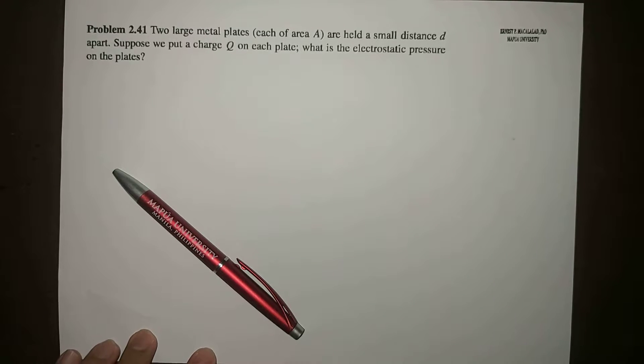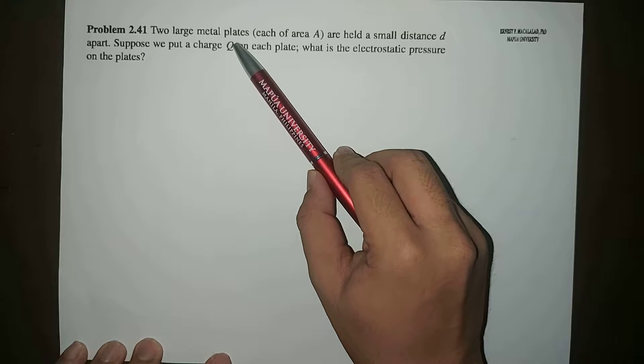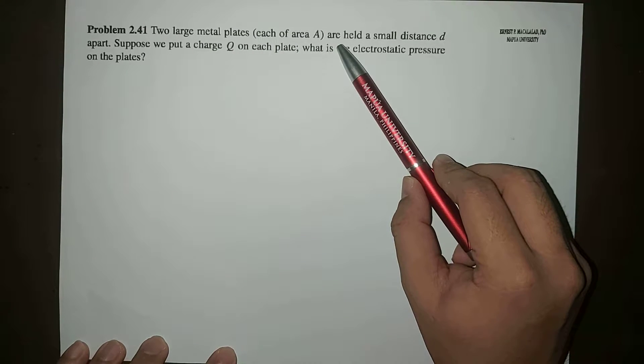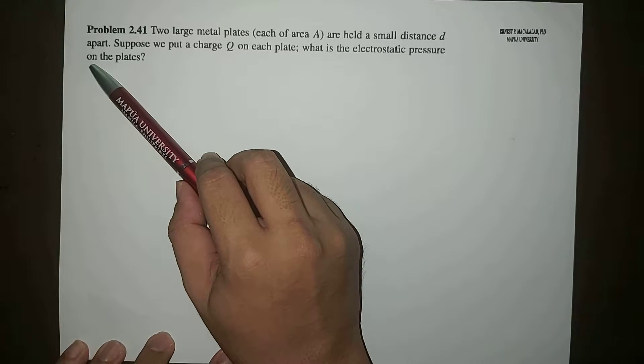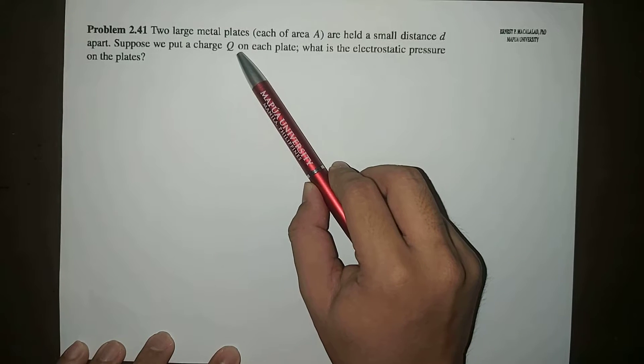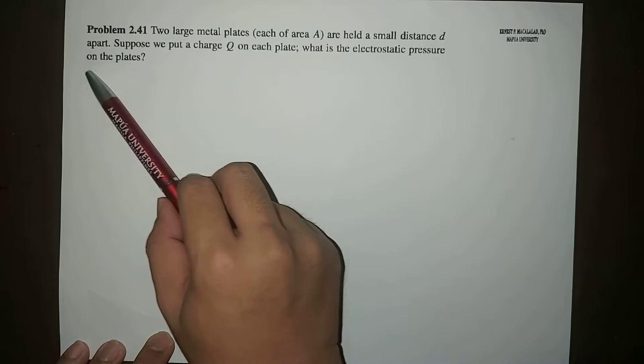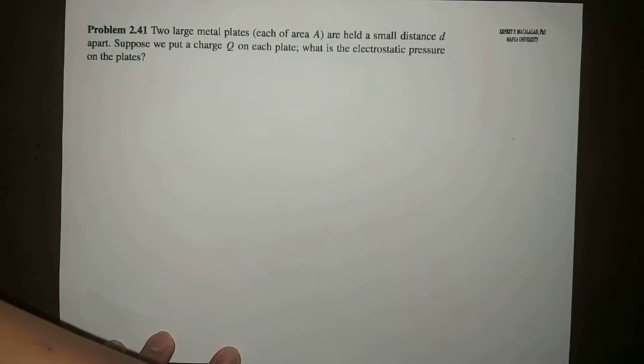What's up guys, it's me Sir Ernest and today we're going to solve problem 2.41 of Griffith's fourth edition. The problem reads: two large metal plates, each of area A, are held a small distance D apart. Suppose that we put a charge Q on each plate, what is the electrostatic pressure on the plates?